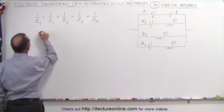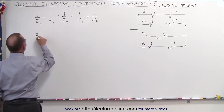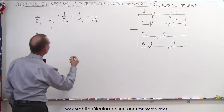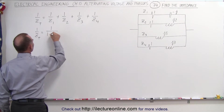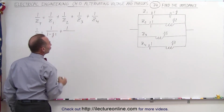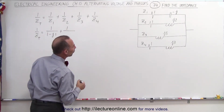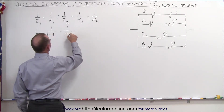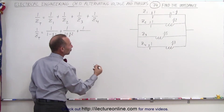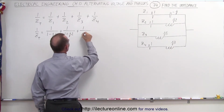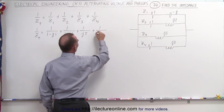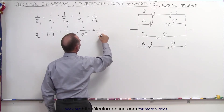So this becomes the following: one over Z total is equal to one over (1 minus J1), plus one over Z2, which is (1 plus J2), plus one over the third branch which just has an inductor so that will be J5, plus one over the fourth branch which gives us (1 plus J3).